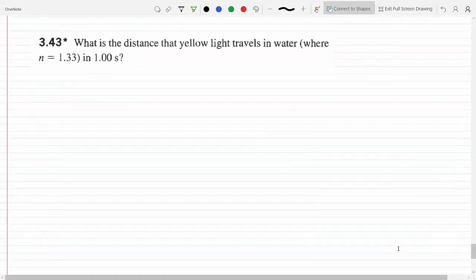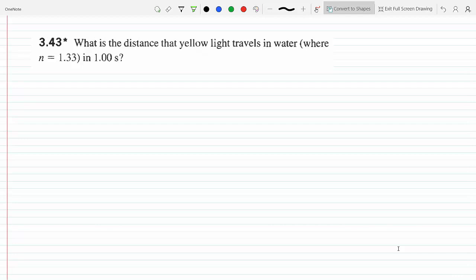Okay, so this is a straightforward question. What is the distance that yellow light travels in water? We know that the speed of light changes as light propagates a medium other than vacuum. It's no longer C, it's no longer 3 times 10 to the 8.